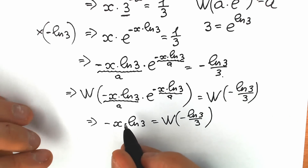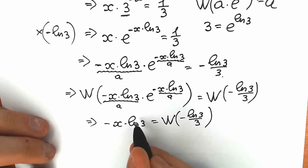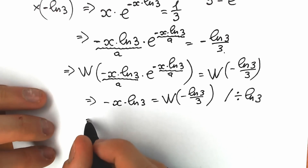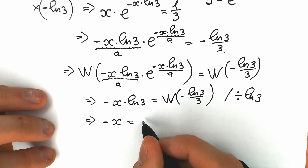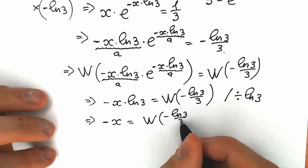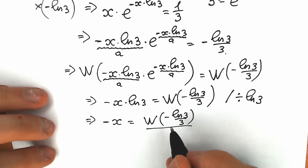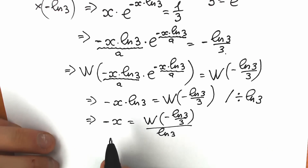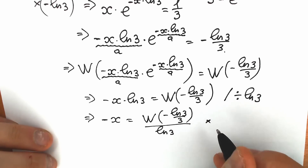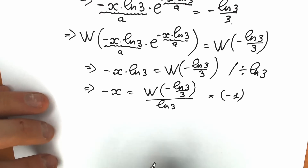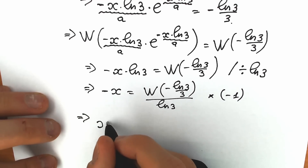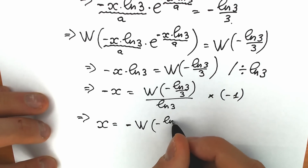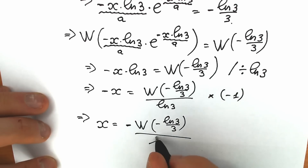Now let's find x. Dividing both sides by natural log 3 cancels it from the left side, giving minus x equal to Lambert W of minus natural log 3 over 3, all divided by natural log 3. Then multiplying both sides by minus 1, we have x equal to the negative of Lambert W of minus natural log 3 over 3, divided by natural log 3. This is our final answer.